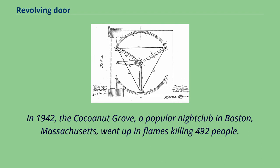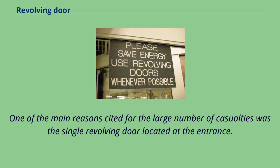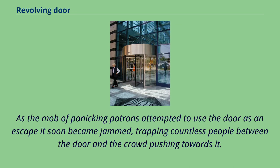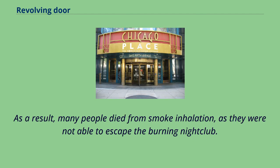In 1942, the Cocoanut Grove, a popular nightclub in Boston, Massachusetts, went up in flames killing 492 people. One of the main reasons cited for the large number of casualties was the single revolving door located at the entrance. As the mob of panicking patrons attempted to use the door as an escape it soon became jammed, trapping countless people between the door and the crowd pushing towards it. As a result, many people died from smoke inhalation as they were not able to escape the burning nightclub.